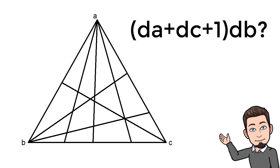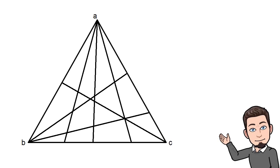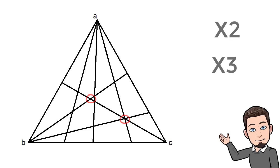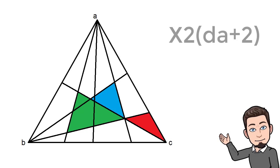We also have dc? para triangles multiplied by (da+db+1). But we still have to count some remaining triangles. First, some new definitions: x2 points are the intersecting points between db and dc segments, and x3 points are the intersecting points between da, db, and dc segments. The remaining triangles are formed by x2 or x3 points with da segments as their base, plus the sides of the original triangle — giving x2 multiplied by (da+2) triangles.